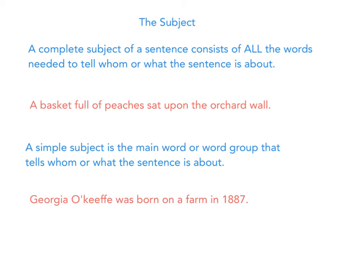We know that the subject tells whom or what the sentence is about. A complete subject consists of all of the words needed to tell whom or what the sentence is about. For example: 'A basket full of peaches sat upon the orchard wall.' A complete subject is who or what is doing the verb plus all of the modifiers or descriptive words that go with it. If you ask yourself who or what sat upon the orchard wall, it is 'a basket full of peaches.'